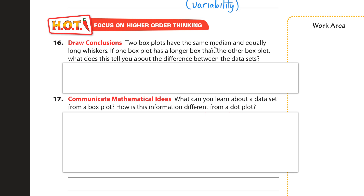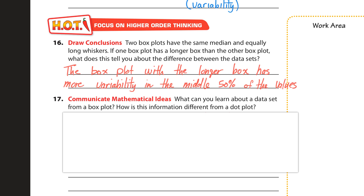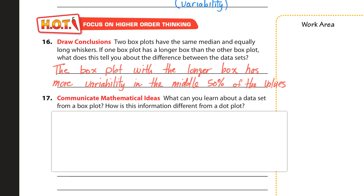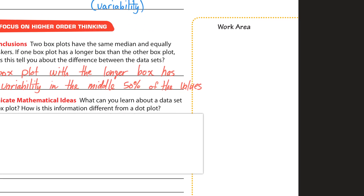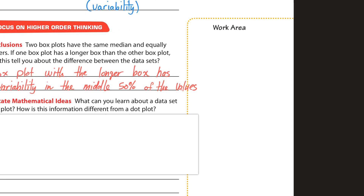Number 16: two box plots have the same median and equally long whiskers. If one box plot is longer than the other, what does this tell you about the difference between the data sets? The box plot with the longer box has more variability in the middle 50% of its values.